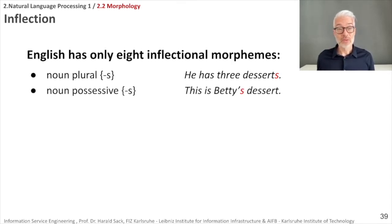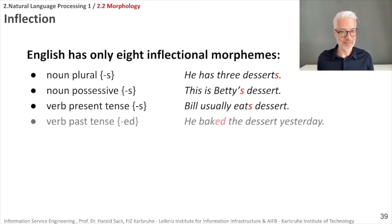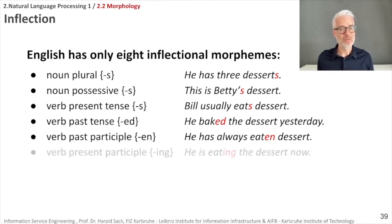'S' is also used for verbs: the verb present tense 's,' as in 'Bill eats a dessert,' adds 's' to the verb 'eat.' For past tense, regular verbs add 'ed' — 'he baked the dessert yesterday.' There is also the verb past participle, as in 'he has always eaten dessert,' where 'en' is added. And the verb present participle uses 'ing' — 'he is eating the dessert right now.'